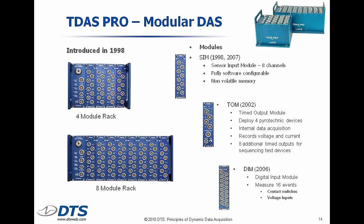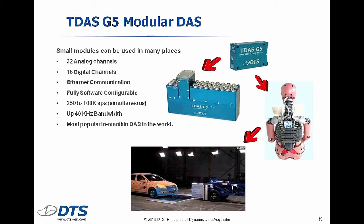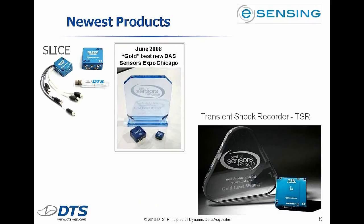This is the system that's here at CAMI. It's a modular system where we have what we call sensor inputs, a TOM or timed output unit which is used to fire airbags and seat belt pretensioners, and a thing called a DIM — that's a digital input unit. In the G5 world it's basically the same kind of system, only packaged differently, designed to mount on a sled, into a vehicle, or even into a crash dummy. And then finally the Slice systems, which are the latest generation that we sell.